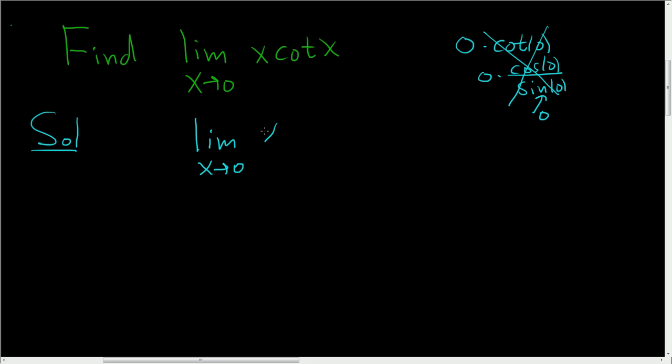This will be x times cotangent, which is cosine x over sine x. Let's write it one more time. So this is the limit as x approaches 0 of x cosine x over sine x. And I think now it's a little more clear that we can use L'Hopital's rule.